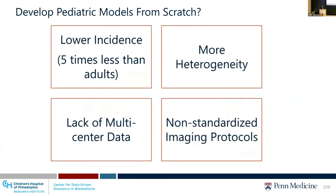We have to remember that children are not small adults, and anything designed for adults cannot necessarily be directly used for children. If we want to develop pediatric models from scratch, we face a challenge of lack of data, which mainly comes from the lower incidence of brain tumors in pediatric cases compared to adults, but also a lack of multi-center data, non-standardized imaging protocols across different centers, and more heterogeneity across patients.